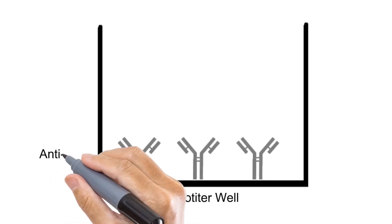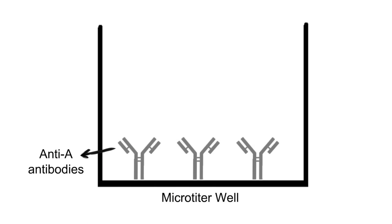In the first step, a microtiter well is coated with anti-A antibodies like this. The coating is mediated with the help of coating buffers.